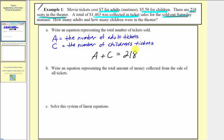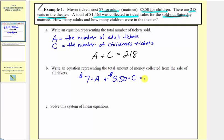For Part B, we're asked to write an equation representing the total amount of money collected from the sale of all tickets. Adult tickets cost seven dollars and children's tickets cost five dollars fifty cents. So the total money collected would be seven dollars times A, the number of adult tickets, plus five dollars fifty cents times C, the number of children's tickets, and this must equal one thousand four hundred sixty three dollars.